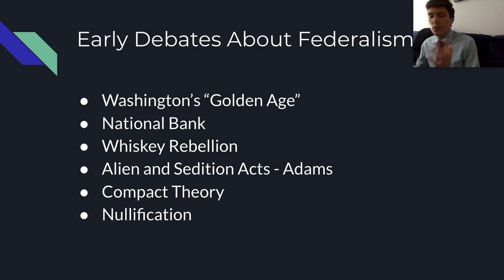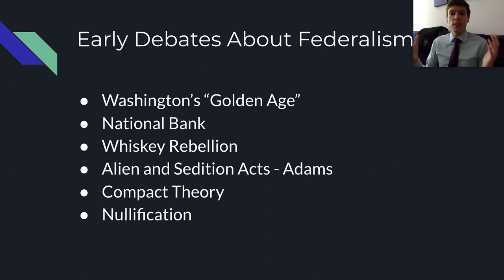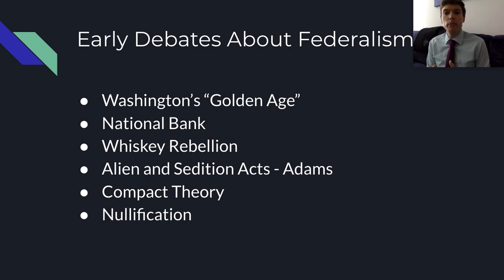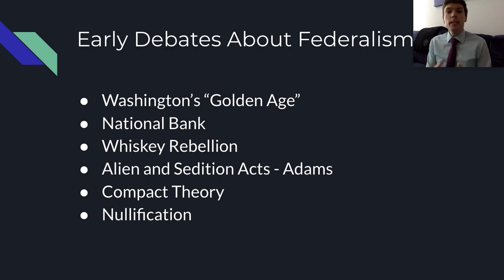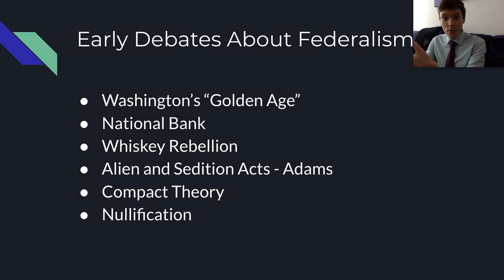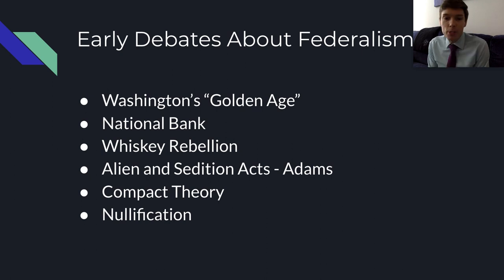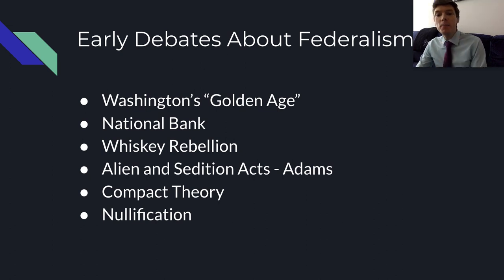As Adams' administration was jailing its detractors, Jefferson responded by developing compact theory, which held that the 13 sovereign states, in creating a federal government, had entered into a compact regarding its power and jurisdiction. States that created the national government could judge whether federal authorities had broken the compact by overstepping their limited authority. The theory challenged the authority of the federal judicial branch and the supremacy of national law.